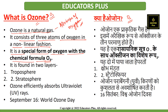Ozone is present in two layers. First, ozone is in the troposphere, and the other is in the stratosphere. Ozone in the troposphere is considered bad ozone because it dirties the air and helps to form smog, which is not good for breathing activity.